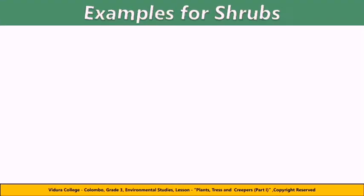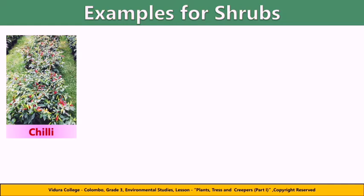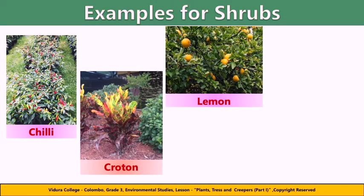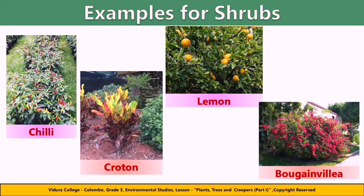Let's learn some more examples for shrubs. Chili plants are small shrubs that usually grow for a year or more in warm locations; leaves and young tips can be used fresh or when cooking curries. Croton plants are tropical house plants — their leaves come in a wide variety of colors, color combinations, leaf shapes and leaf sizes depending on the variety. The lemon plant produces oval-shaped yellow fruit; the fruit is used for cooking and the juice and peel are used to make medicine. The flowers of the bougainvillea plant are small and plain, with bright green leaves alternately arranged along stems.